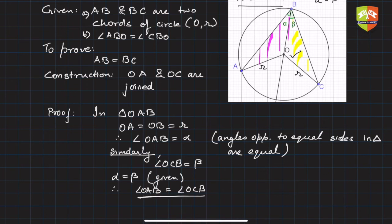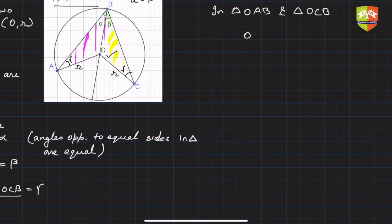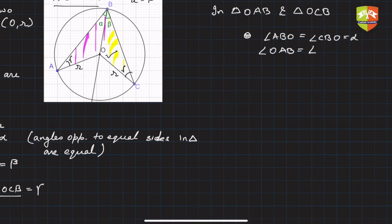Let's call this angle gamma. So angle OAB equals angle OCB equals gamma. Now in triangle OAB and triangle OCB, we have: angle ABO equals angle CBO (equal to alpha or beta), and angle OAB equals angle OCB, which is gamma — just proved. Also, OB equals OB, the common side.